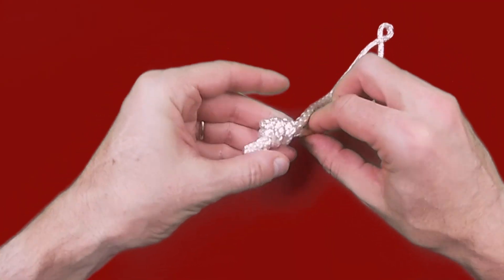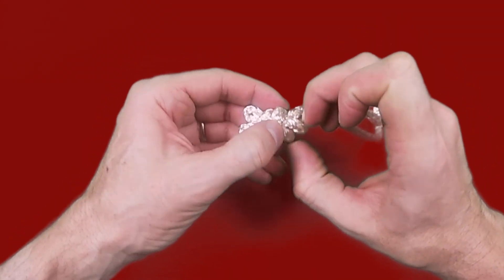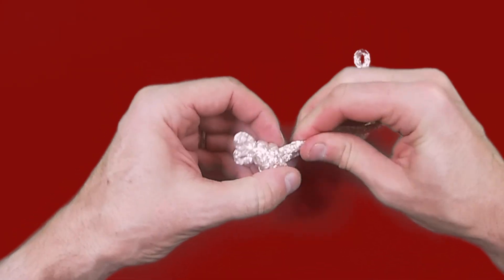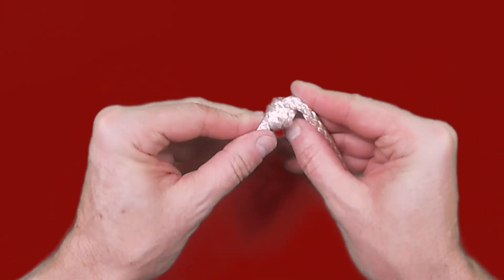Just work the knot forward ensuring that the lengths of the two parts of the shackle are equal and as we said earlier that there's no twists in the lines over the top of each other.